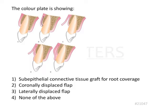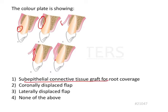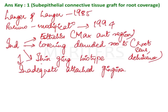The color plate is showing a split thickness flap that has been created, reflected, and a graft has been placed over here. The flap has been sutured back into place and there is root exposure. The answer here would be sub-epithelial connective tissue graft for root coverage. This technique was given by Langer and Langer in 1985, and later Bruno proposed a modification in 1994.